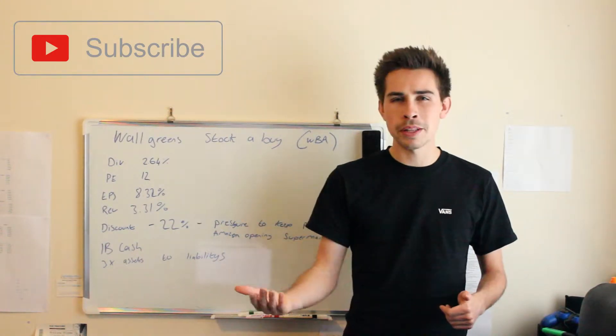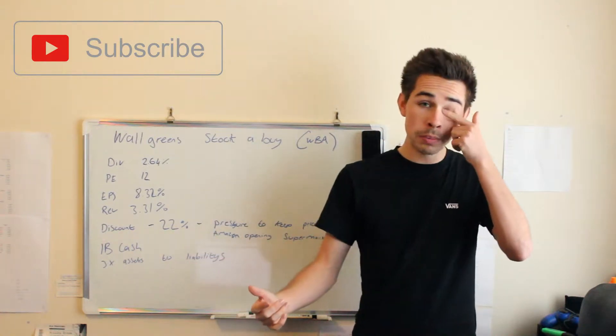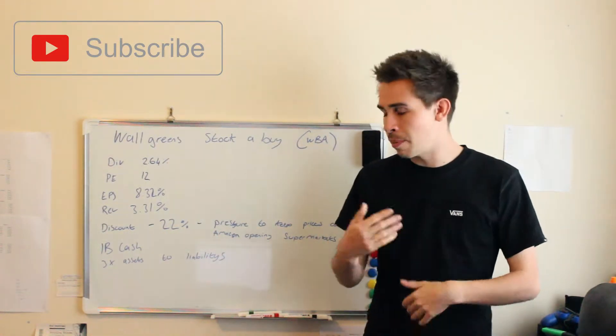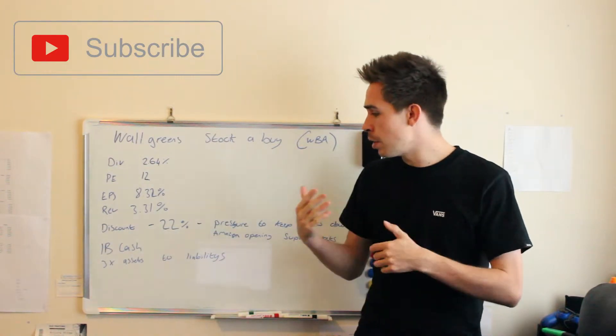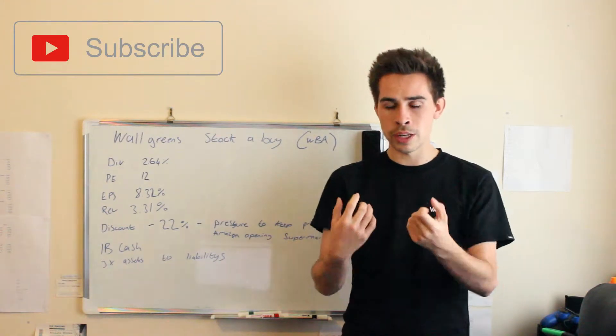The reason why we're talking about this stock is it's on a little bit of a discount. The discount is 22% off its highs, so a little bit of a pullback overall, a little bit of a correction. The reason why it's down 22% is there's two reasons, and because of both reasons, they pulled it down quite a bit more.